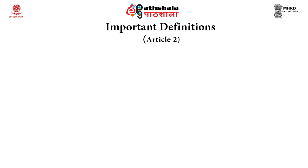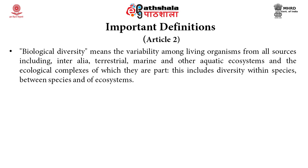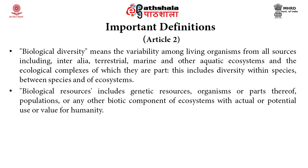There are certain important definitions laid down in Article 2 of the Convention. Biological diversity, as per the Convention on Biological Diversity 1992, means the variability among living organisms from all sources, including terrestrial, marine, and other aquatic ecosystems, and the ecological complexes of which they are a part. This includes diversity within species, between species, and of ecosystems. Biological resources include genetic resources, organisms or parts thereof, populations, or any other biotic component of ecosystems with actual or potential use or value for humanity — that is, all resources which serve a purpose for human beings in one way or another.